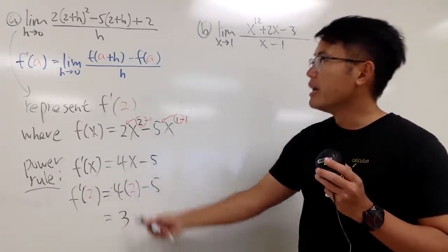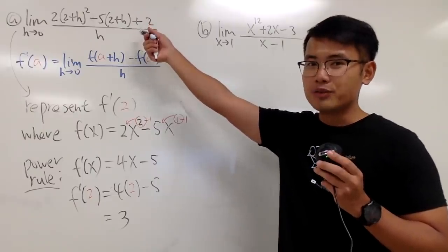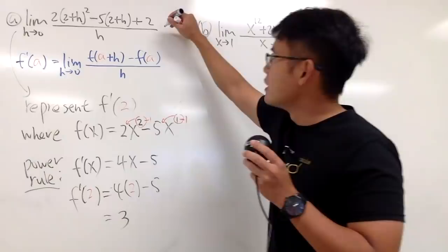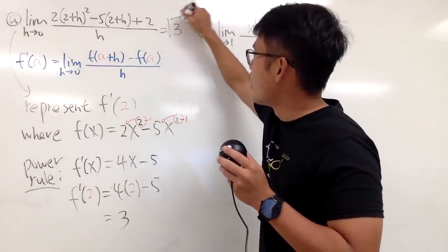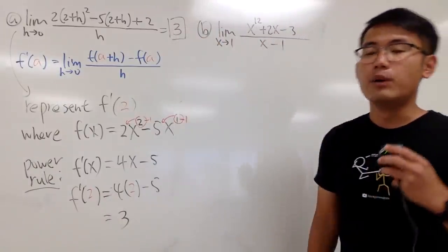And, of course, if you want to figure out f' of 2, you can just go ahead and do f' of 2. Plug in the 2 in here, you get 4 times 2, and then minus 5. This is 8 minus 5, which is 3. So, f' of 2 is 3. This represents f' of 2 as well. So, this right here is, of course, also equals to 3. And we are done.